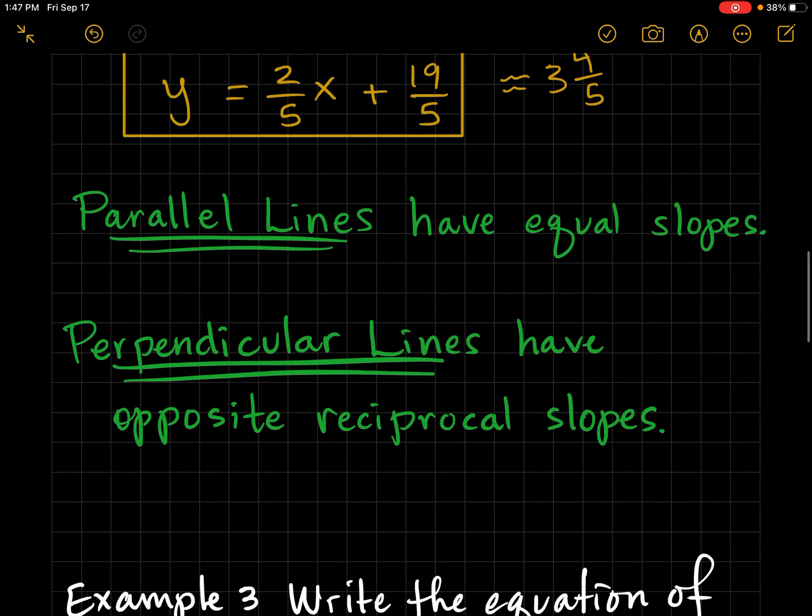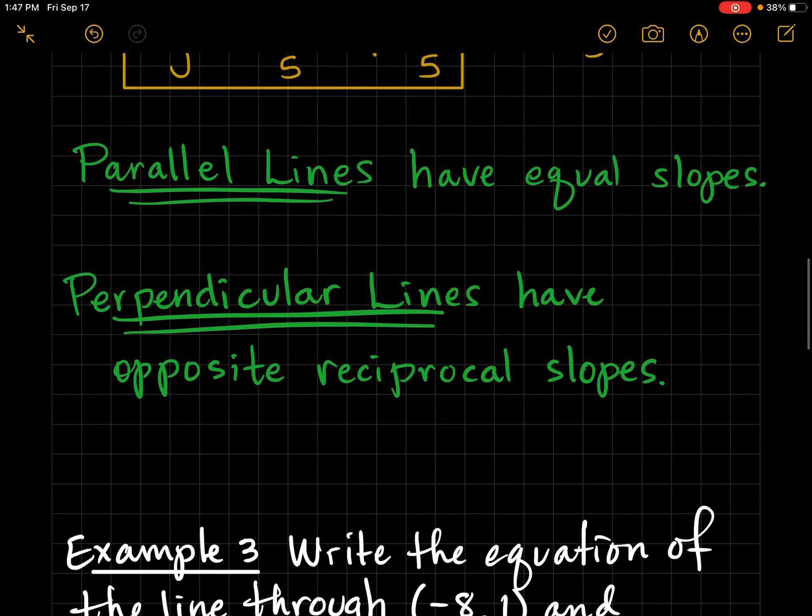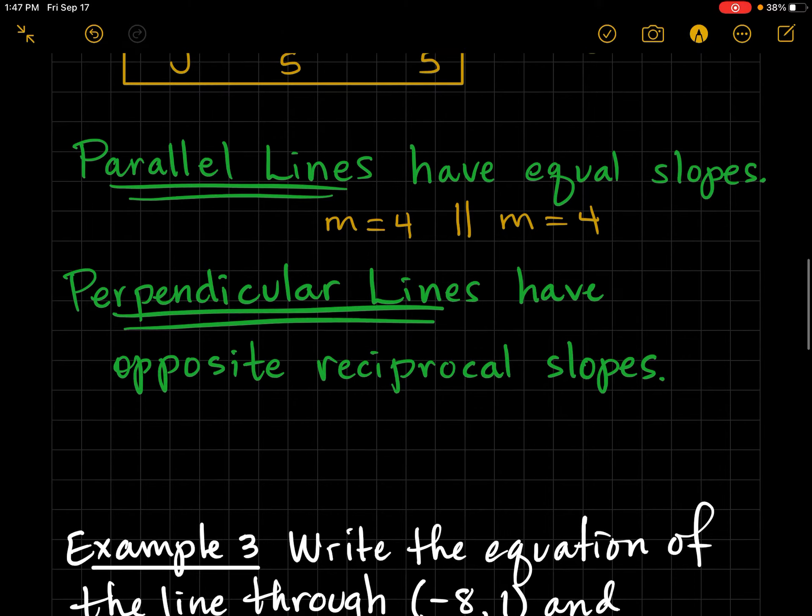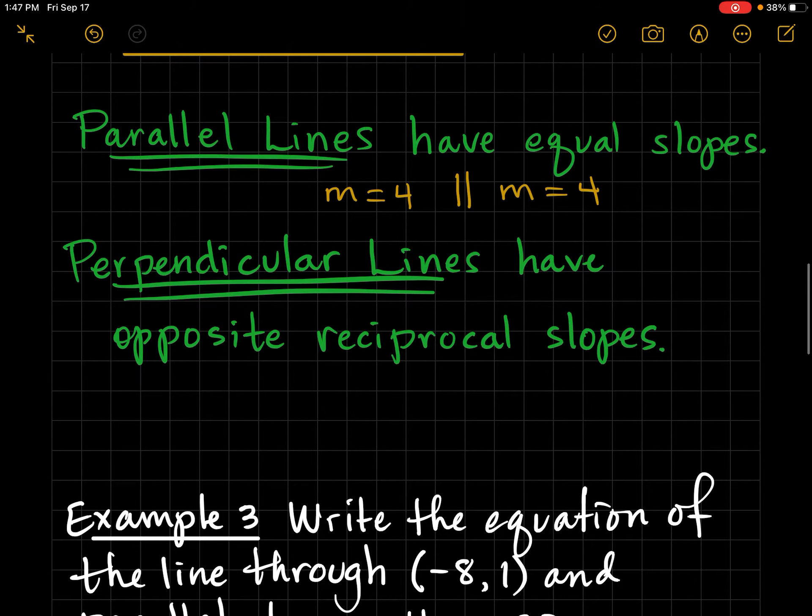Let's review. Parallel lines have equal slopes. So for example, if the slope of one line is 4, then the line parallel to that would also have a slope of 4.